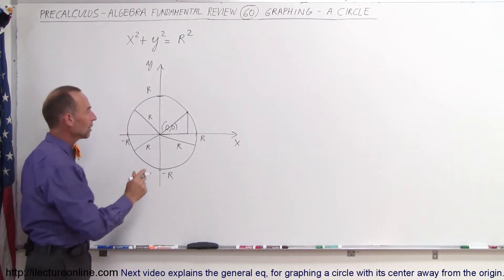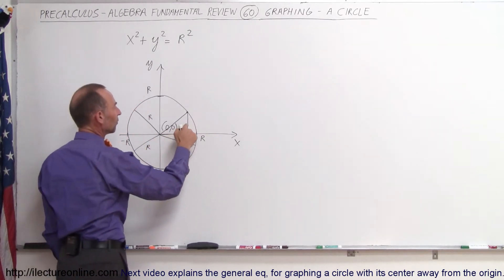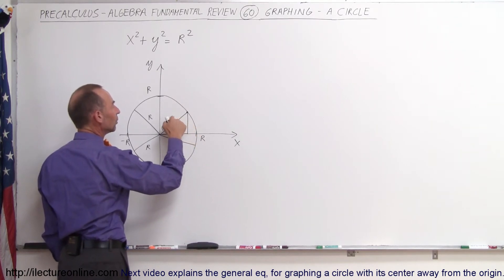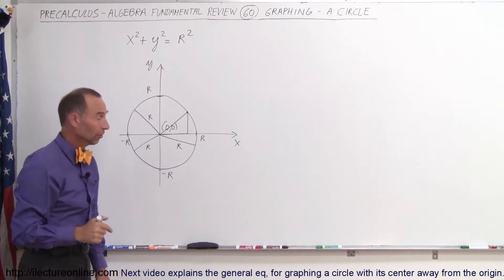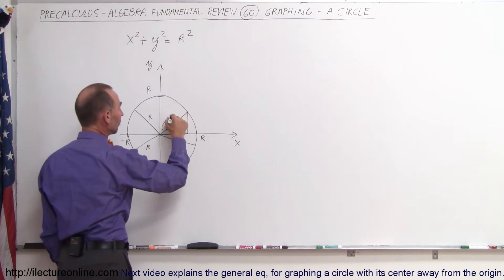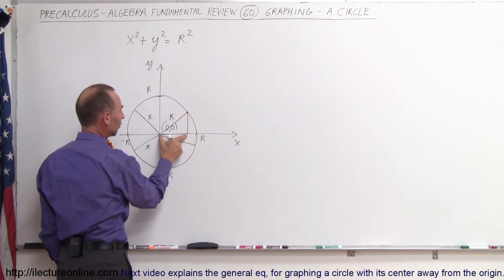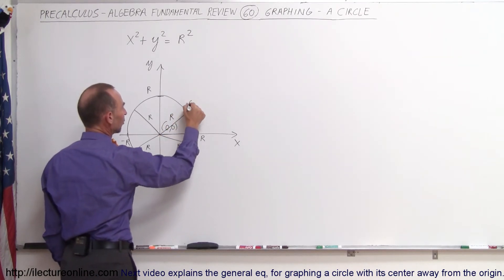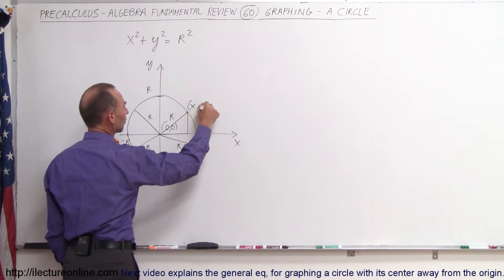And of course, with a triangle, we know that the sum of the squares of the sides equal the square of the hypotenuse. So if we call this distance here r, and we call this distance here the x-value of this point, so let's say this point has coordinates x and y,